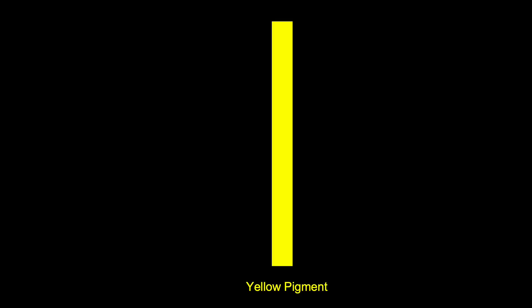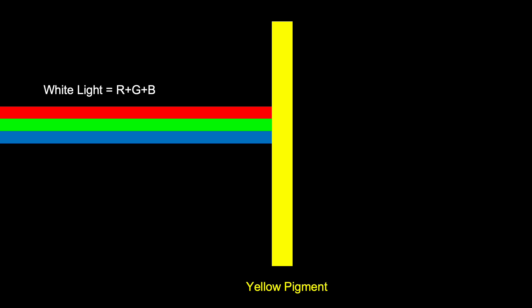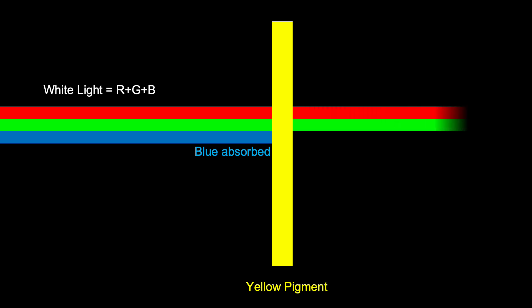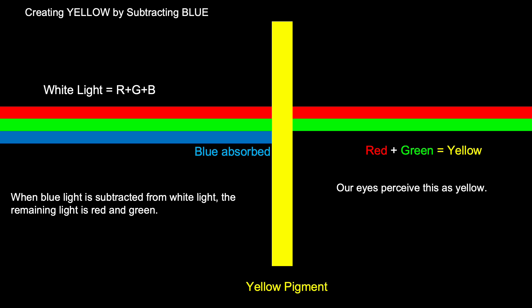Here we see how yellow is formed by color subtraction. White light contains red, green and blue. When this passes through a yellow pigment, blue light is absorbed. That leaves only red and green to pass through. Since red plus green is perceived by our eyes as yellow, the final color we see is yellow. The role of yellow pigment is to subtract blue and reflect red plus green.